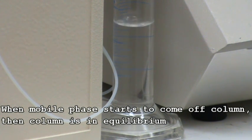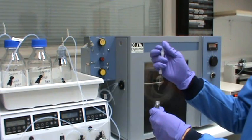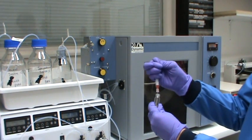This shows the column is now in equilibrium. In this case the mobile phase is the lower phase, so you can clearly see that it is now coming off the column. Your sample is now ready to inject into the HPCCC column.